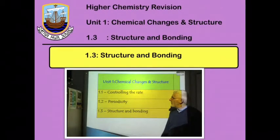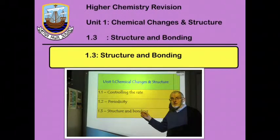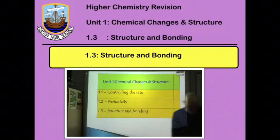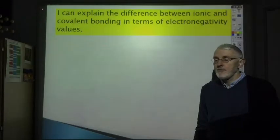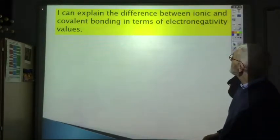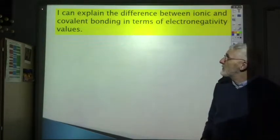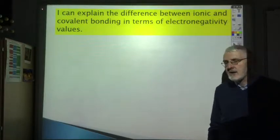In the previous video we looked at the structure and bonding of elements, and in section 1.3 we're going to be looking at the structure and bonding in compounds. The first learning outcome is that you should be able to explain the difference between ionic and covalent bonding in terms of electronegativity values.